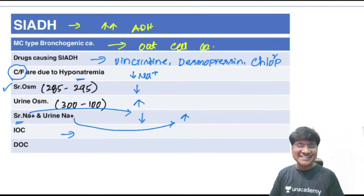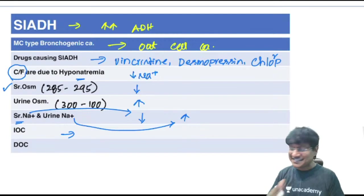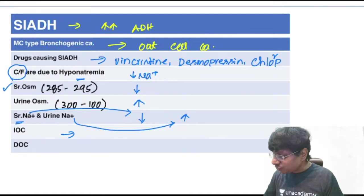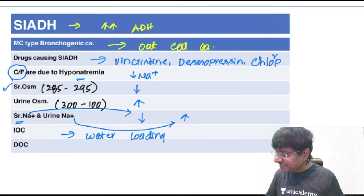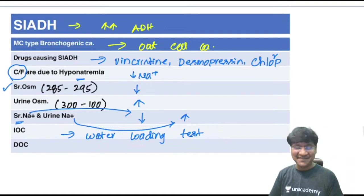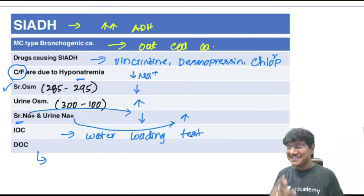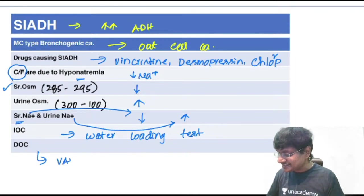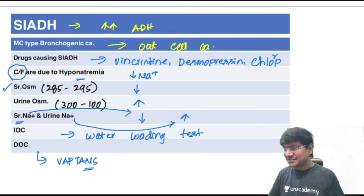The investigation of choice in SIADH patients is the water loading test. The drug of choice is Vaptans — vasopressin receptor antagonists. These include Tolvaptan, given orally, and Conivaptan, given intravenously.